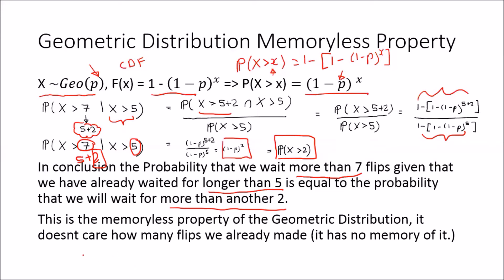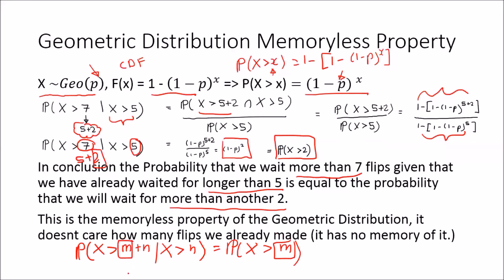The geometric distribution is the only discrete distribution that has this memoryless property. I've also made a video about the exponential distribution, showing it also possesses this property. To summarize: the probability that X will be greater than n plus m trials, conditioning on the fact that you've already waited more than n trials, is simply the probability that X will be greater than m. It has no memory of the failures that have already occurred — it cares only about the length of the remaining interval m.